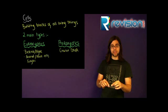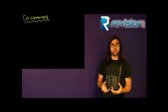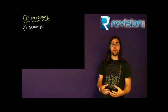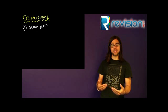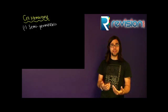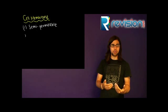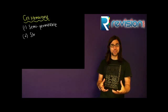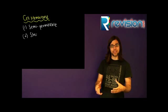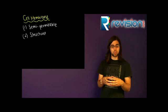The cell membrane is universal to both groups and has a few different functions. First of all, it is selectively permeable, which means it chooses what is able to go in and what is able to go out. It also has a structural role — it keeps everything within the cell as one unit.